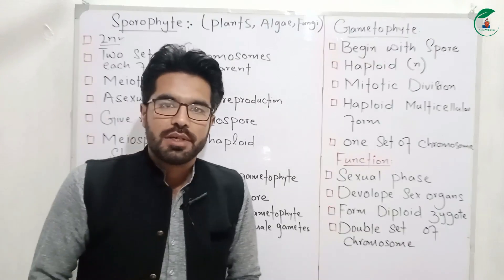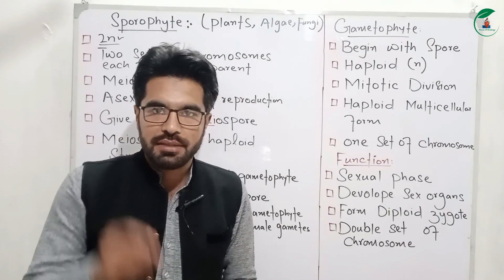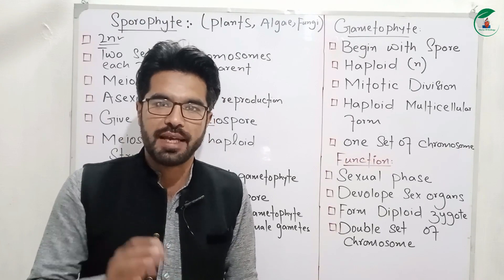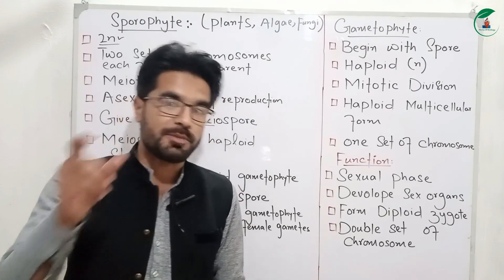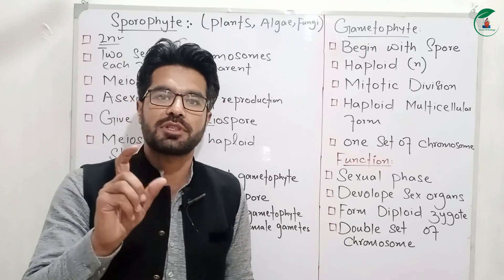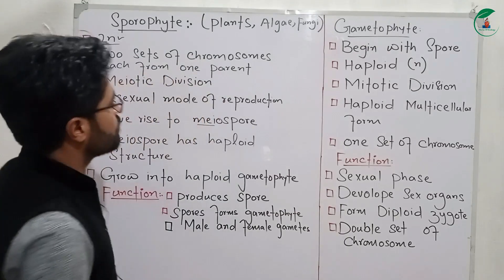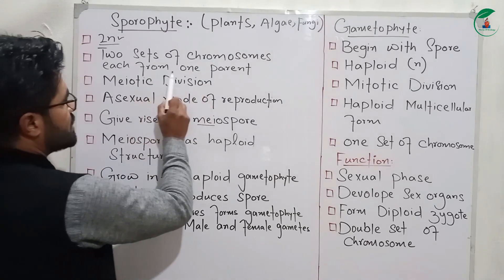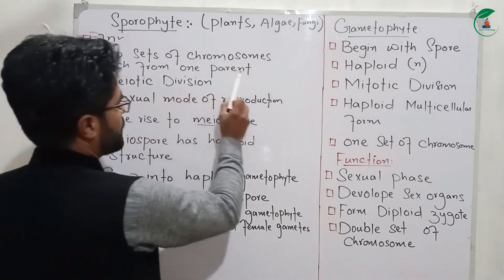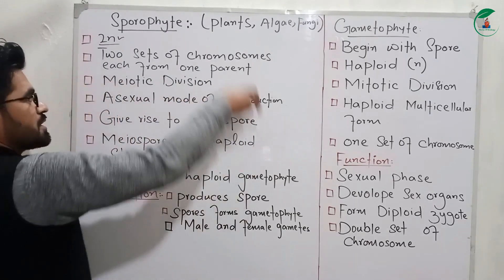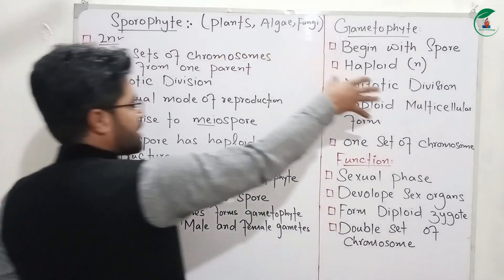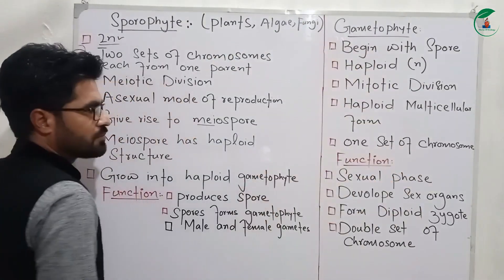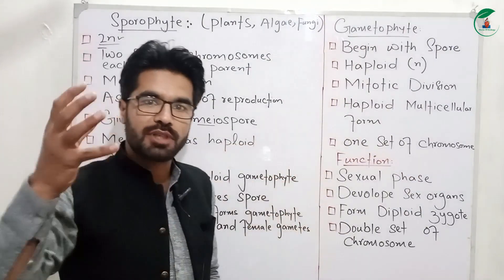2N means diploid. This means that the two sets are diploid. There can be a chromosome number — the parents are also using gametophyte. They are male gamete and female gamete.